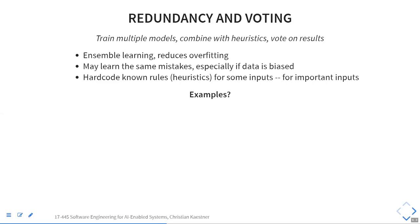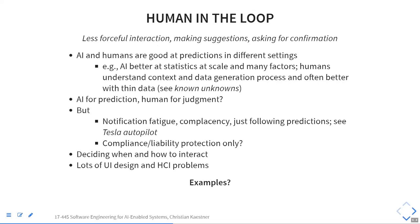Ensemble methods reduce overfitting, but don't protect against issues like reverse causality. If the data is biased, this doesn't help at all — all models learn from the same biased data. It's also common to use hard-coded rules or heuristics, like in the toaster example, you could hard-code 'never toast for longer than 10 minutes in a row.' You do this often for important inputs where you might overwrite mistakes.